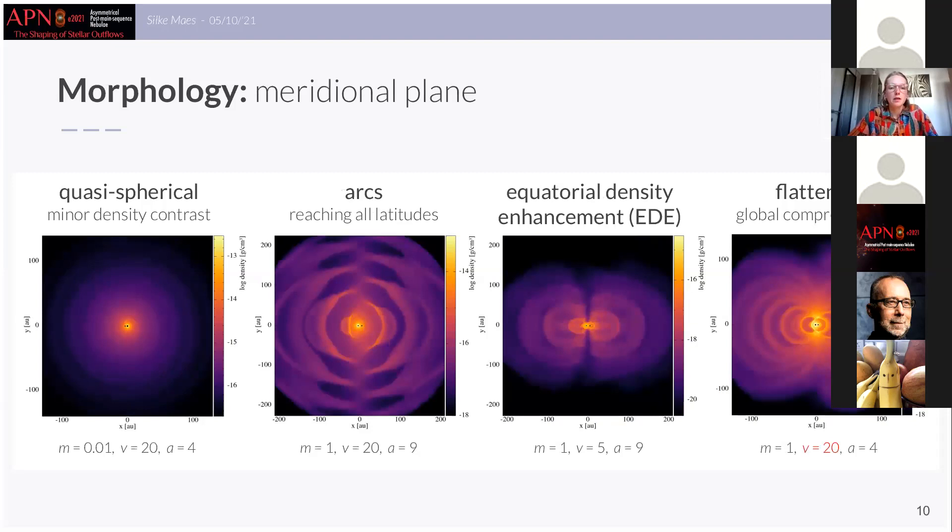Now if we consider the morphologies in the meridional plane, so this is the plane perpendicular to the orbital plane, we generally find arc-like structures definitely when the companion is massive. The biggest difference between the models that I've shown here is that for certain configurations the wind is compressed towards the orbital plane as you can see for example in the cases on the right. And we see also that this compression leaves distinct signatures on the wind and on this I will elaborate in a moment.